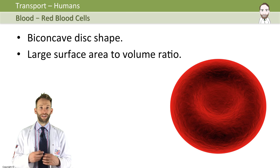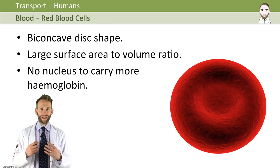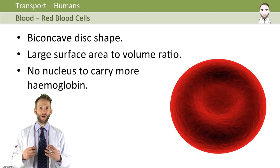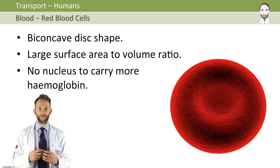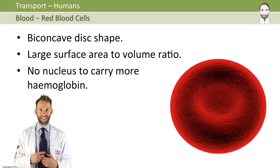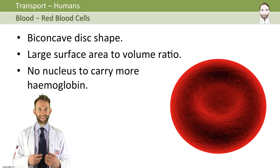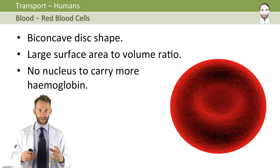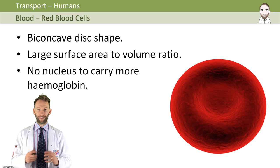Red blood cells also don't have a nucleus, which is obviously very strange for an animal cell, but this allows them to be packed full of a protein called haemoglobin. Haemoglobin is a molecule that picks up oxygen and can carry it around the body and give it out again to the cells that need it. When it picks up oxygen it becomes a molecule called oxyhaemoglobin, then it can give it back out again to the respiring cells and tissues. So red blood cells are perfectly adapted to carry oxygen around the body.